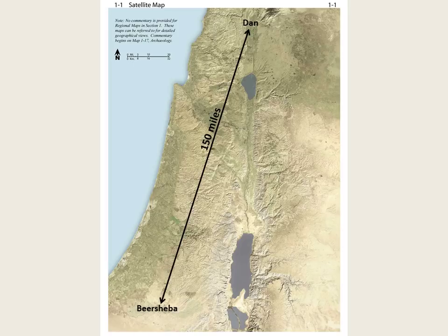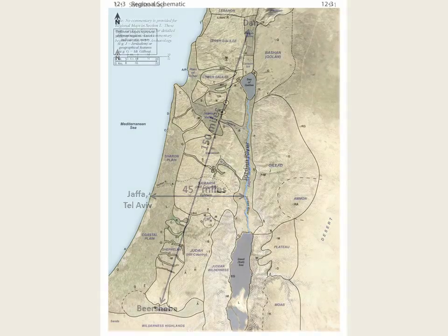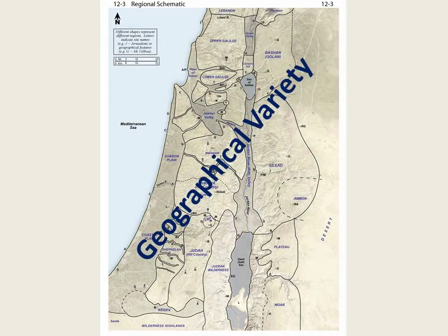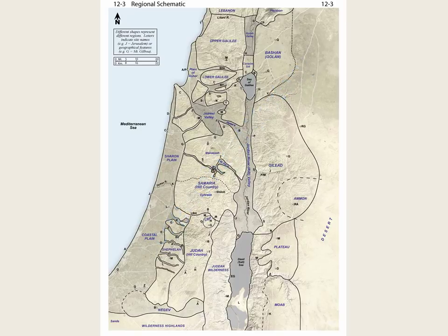From Jaffa on the Mediterranean coast to the Jordan River is only 45 miles. However, in this small land, there is great geographical variety. One region varies significantly from another, even though the regions are only a few miles apart.